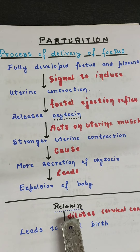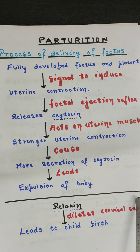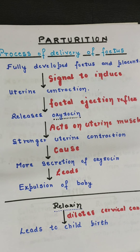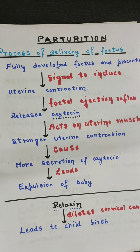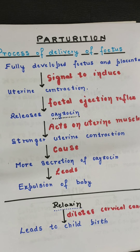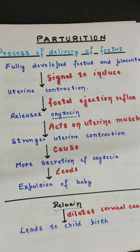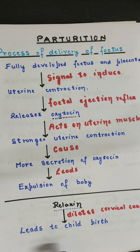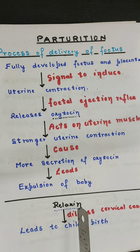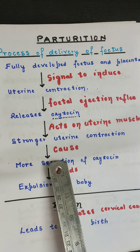There is one more important hormone: relaxin, secreted by both the ovary and the placenta. This hormone relaxes the pubic area — the pelvic region, including the pubic symphysis that we studied in the skeleton chapter in Class 11. It helps increase the space in that area. The cervix of the female reproductive system is also very narrow, so relaxin also helps in dilating the cervical canal, which leads to easy birth of the child.